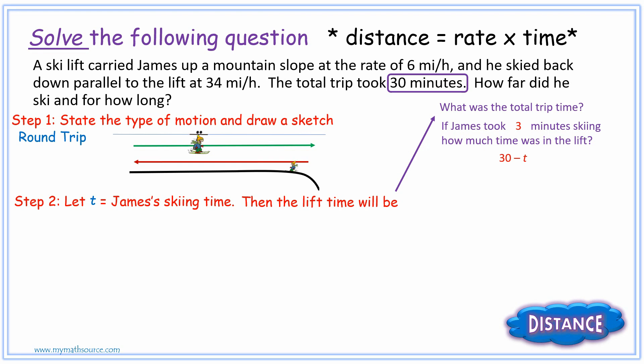But there's one issue that we have here is that 30 minutes is not in hours. And the question is in hours. We have our miles per hour. And so we're just going to transfer our minutes into hours by simply saying, how much is 30 minutes in hours? Well, we say a half an hour. So that's 0.5. And so we have 0.5 minus T as our second expression.